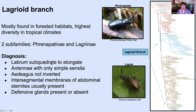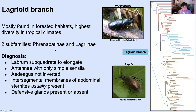This talk is about one of the subfamilies in the Lagreoid branch. This Lagreoid branch is a lineage of Tenebrionidae that's mostly found in tropical forested habitats, unlike those other ones we've seen from the deserts. Currently there are three subfamilies recognized within this Lagreoid branch: the Freenapatini, Lagreini, and also Nilionini — though Nilionini doesn't belong in this branch.